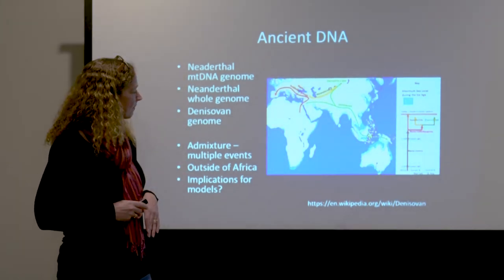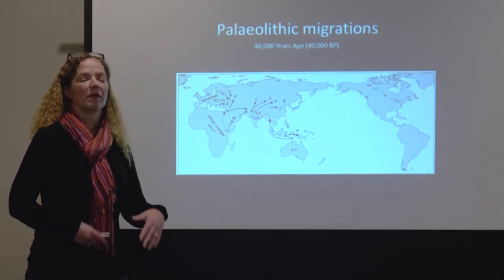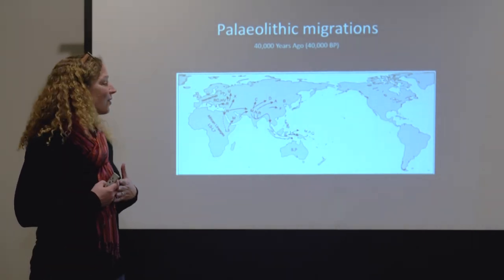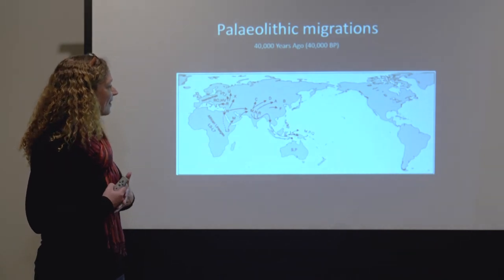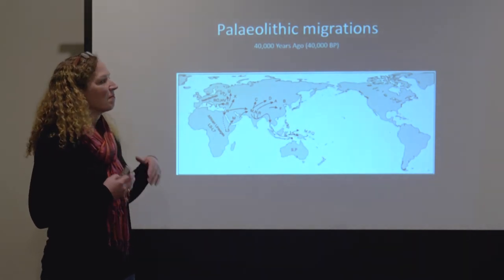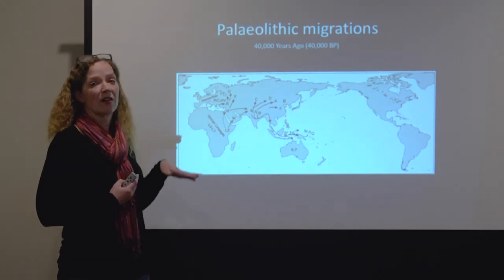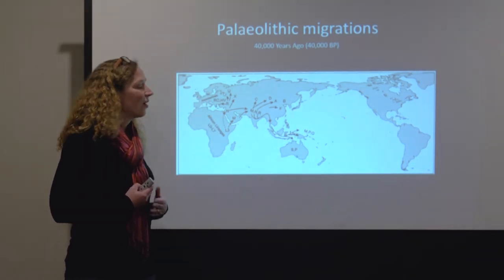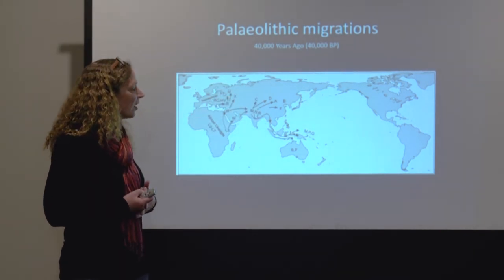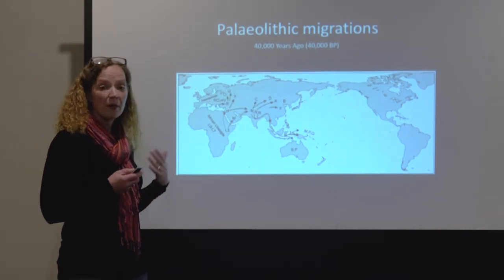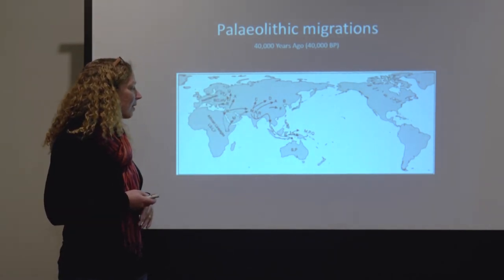We know that humans left Africa about 65,000 years ago during the Paleolithic period. By 40,000 years ago they were up into Europe, by 50,000 years ago into Australia, and possibly a little bit earlier in Asia. We can see these mitochondrial lineages associated with these migrations.